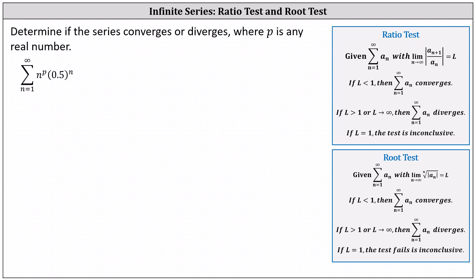Determine if the series converges or diverges where p is any real number. We have the sum from n equals 1 to infinity of n to the power of p times 0.5 to the power of n.